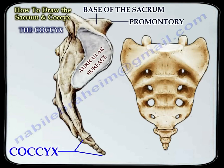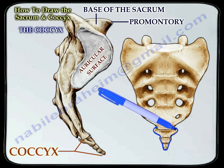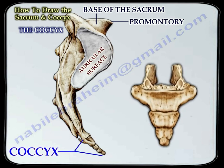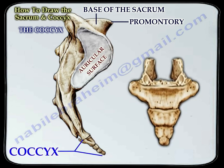The coccyx is a triangular bone that lies at the lower end of the sacrum. It's also called the tail bone. The coccyx is composed of two to four separate or fused vertebrae. It provides important attachments to the tendons, ligaments, and muscles. The coccyx is a shock absorber and excessive movement is abnormal. The coccyx pain is called coccydynia.